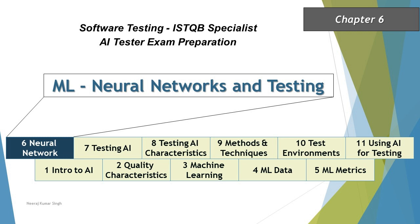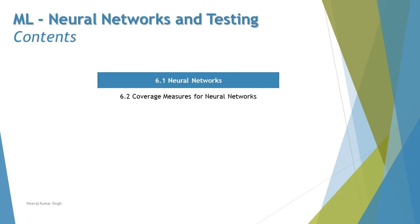And that's what we are looking forward to explore in this particular chapter. So this chapter will be crisp and to the point, talking about two different segments: 6.1, which is neural networks first, and then 6.2, the coverage measures for the neural networks. So to get started today, we're looking at 6.1, the neural networks for ML.